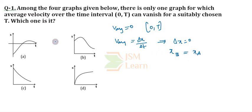Firstly, we have to identify — since displacement is along the y-axis — the two points on the graph which are on the same level. On the first graph, two points at the same level are not possible. On this curve, such two points are not possible.